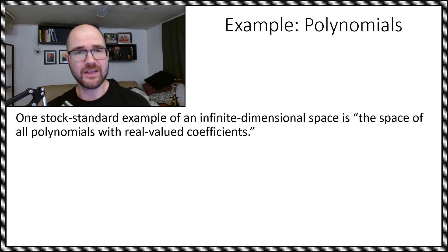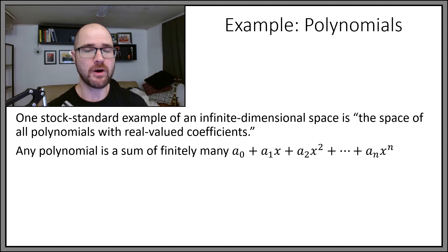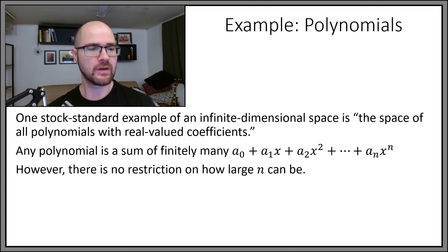Now, the classic example of an infinite dimensional vector space is the space of polynomials with certain coefficients, for example real-valued coefficients. So a polynomial is a sum of finitely many terms, some real number times x to a power, x to the zero power for the constant term x to the first, up to a finite stopping point of x to the nth power. But there's no restriction on how large it can be. n, this last term, x to the n, does have to exist, it does have to stop, but it could be as large as you want.